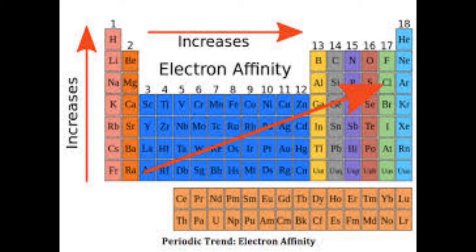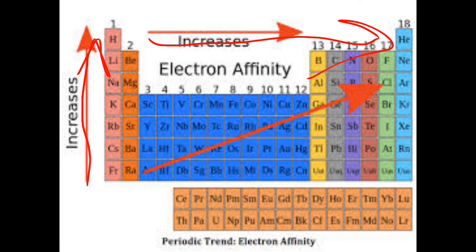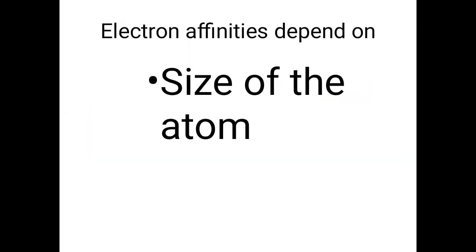Look at the trend of electron affinity: it increases from bottom to top in a group, and it also increases across a period. The overall trend is also studied with a diagonal line.